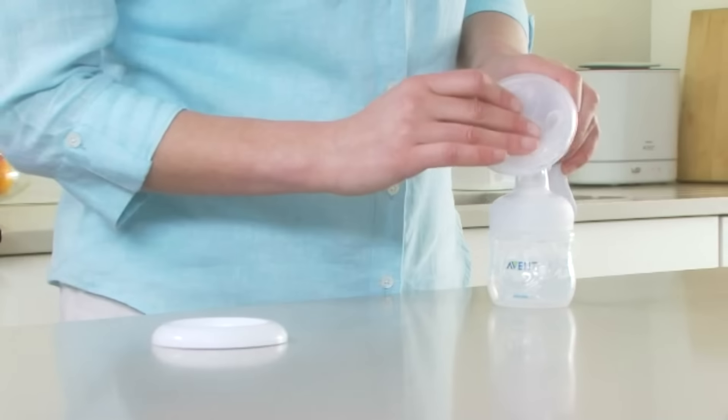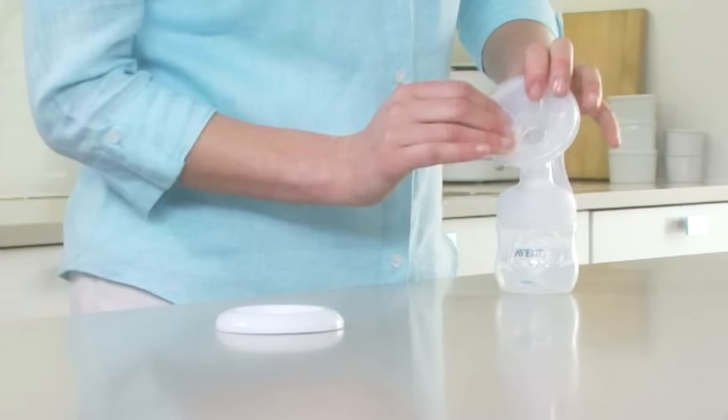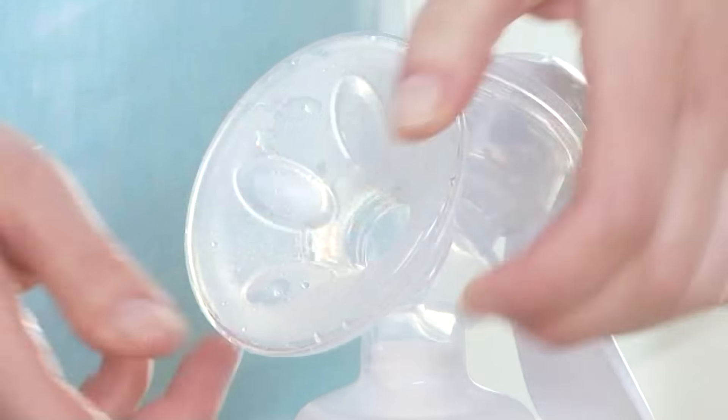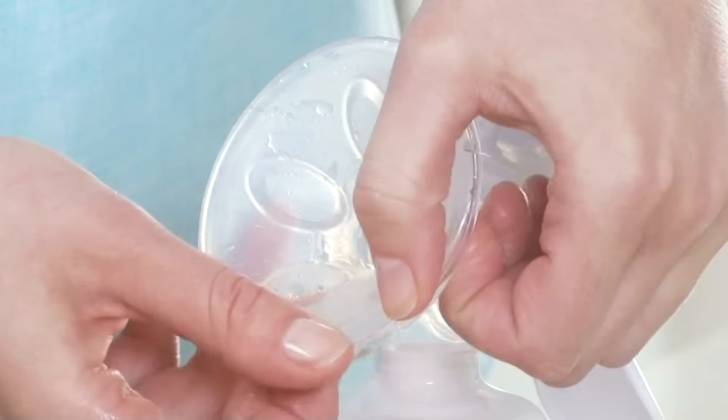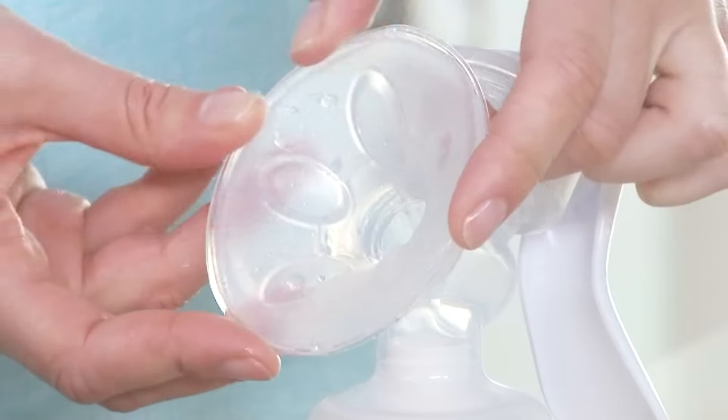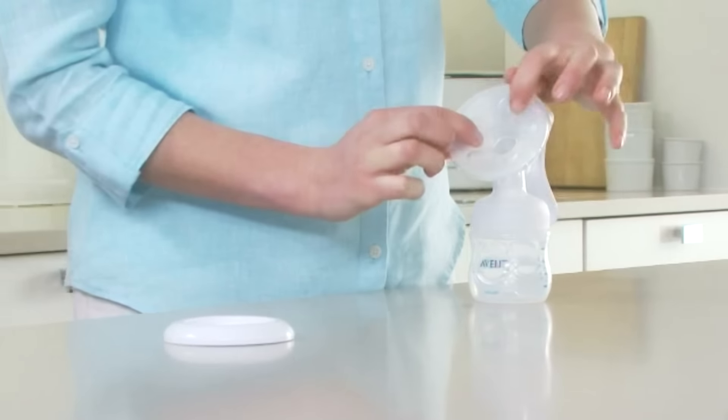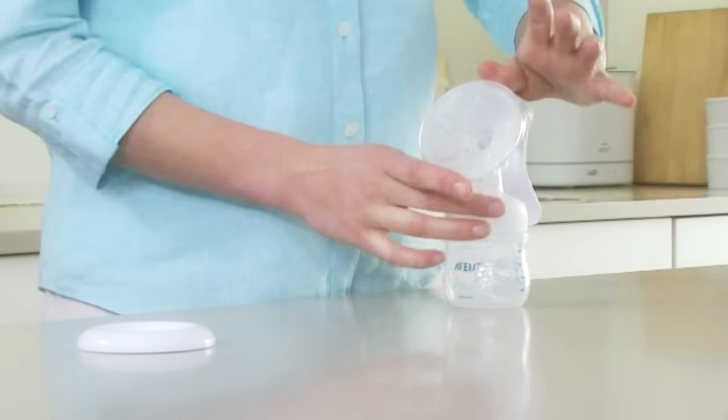Place the soft massage cushion into the funnel-shaped section of the pump body. Push in the inner part of the massage cushion as far as possible and make sure that it's perfectly sealed all around the rim of the pump body. Then run your finger on the flat surfaces between the petals to make sure there is no trapped air behind the cushion.